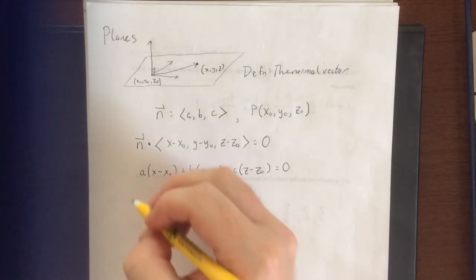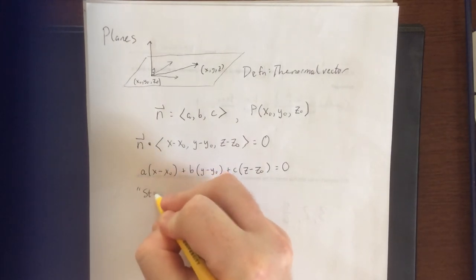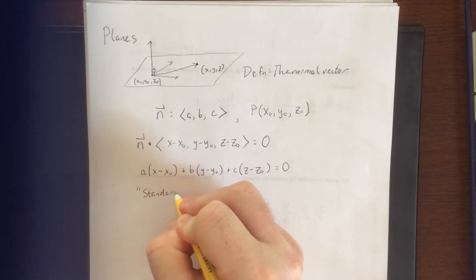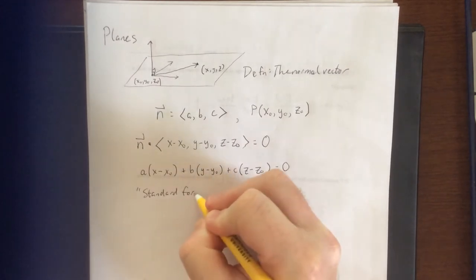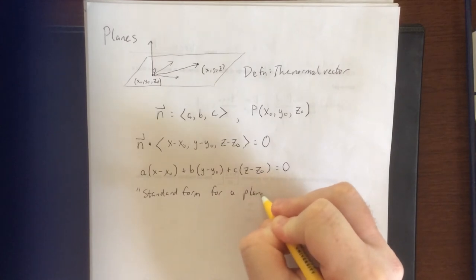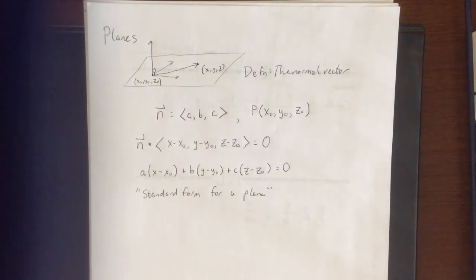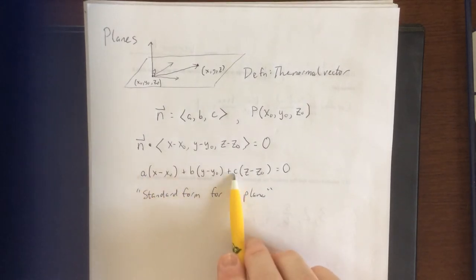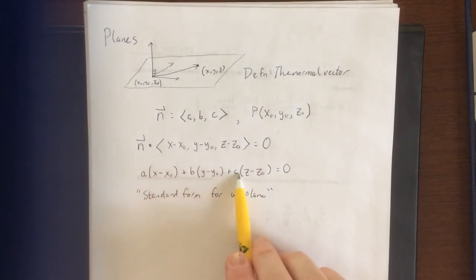What you're looking at here is referred to as the standard form for a plane. Standard form for a plane lets you know immediately what is the normal vector to the plane in the form of the coefficients a, b, and c.